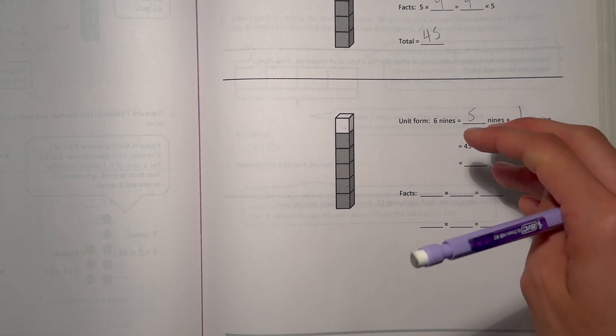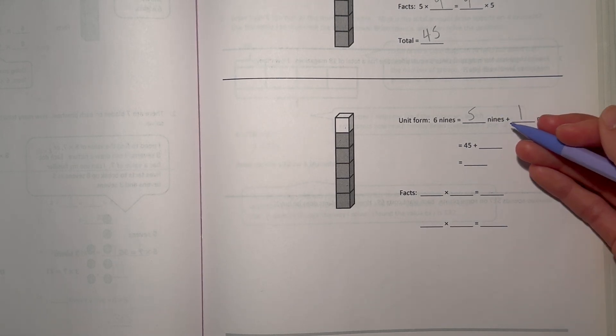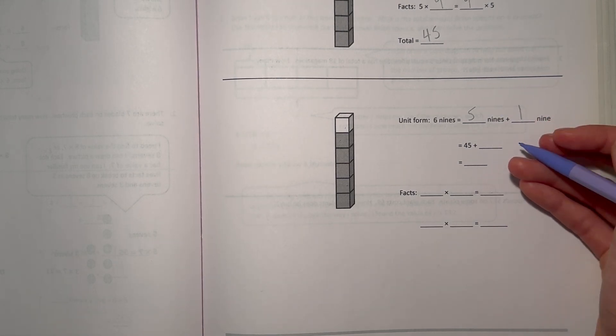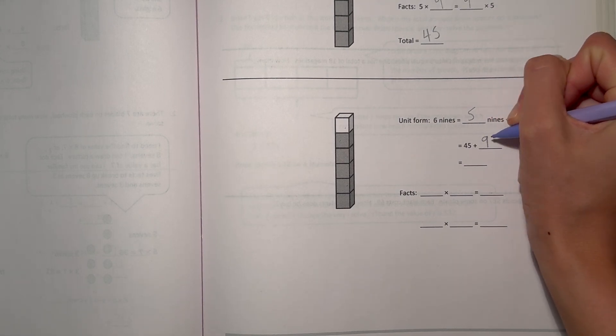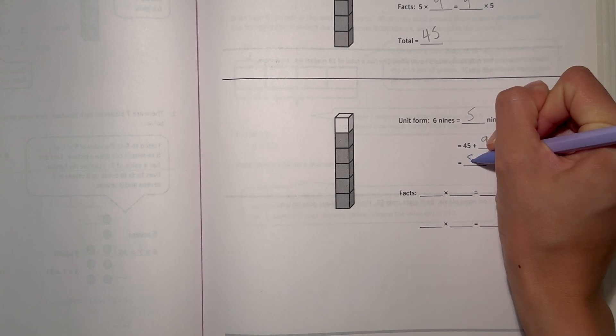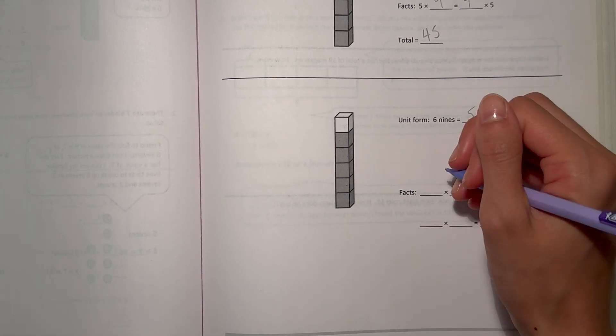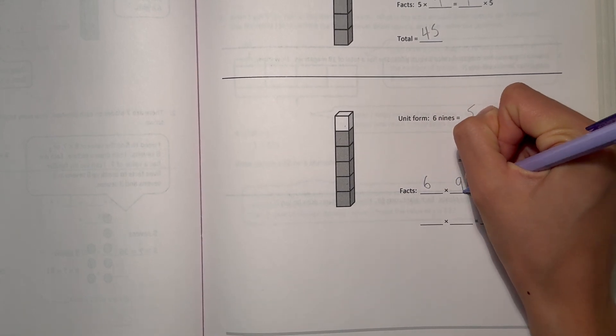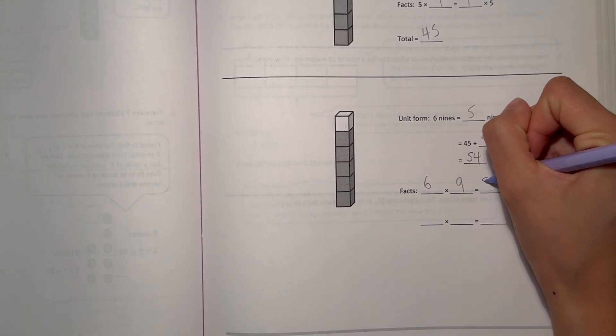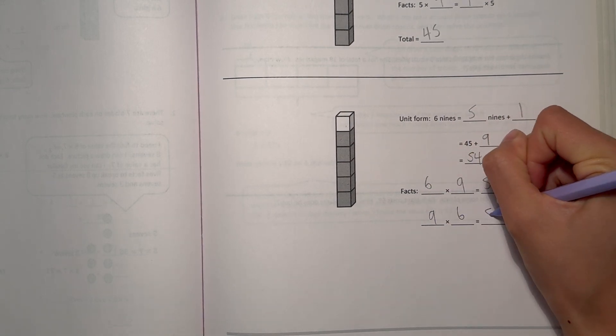And our answer would be 45, because 5 times 9 is 45, plus 1 times 9 is 9. And when we add 45 and 9 together, we get 54. So for our facts, we have 6 times 9, 6 nines, which is 54. But then if we swap it around, 9 times 6 is also 54.